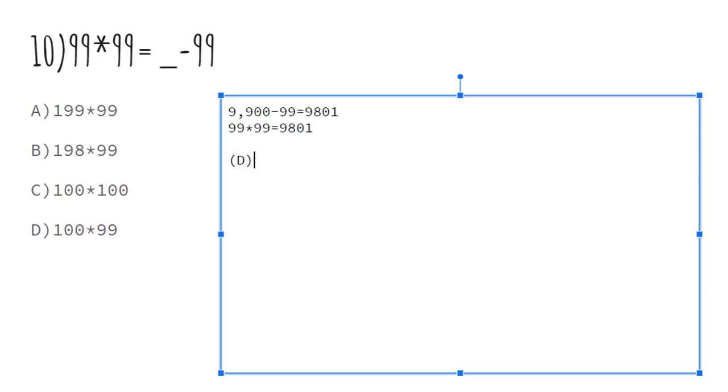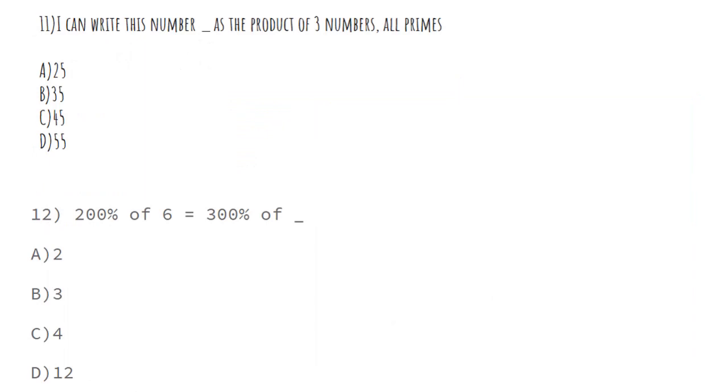So those were those questions. Now you guys try these questions: I can write this number blank as the product of three numbers, all primes: A) 25, B) 35, C) 45, and D) 55. Number 12: 200% of 6 equals 300% of blank. A) 2, B) 3, C) 4, and D) 12. You guys try these, and if you have answers, put them in the comments below. And I'll see you guys next video. Bye!